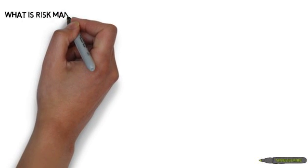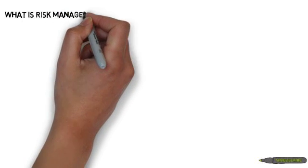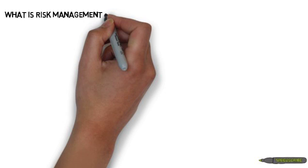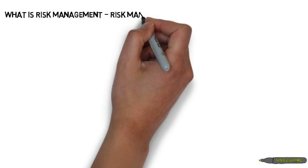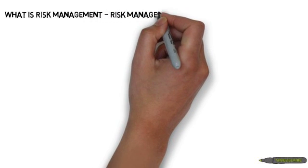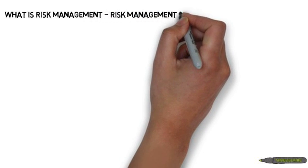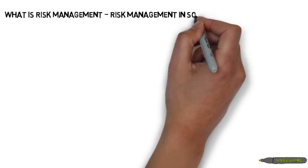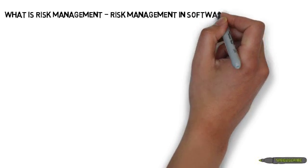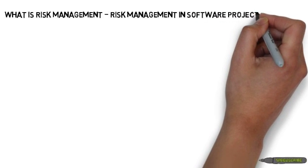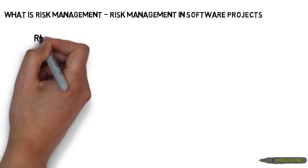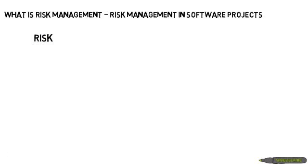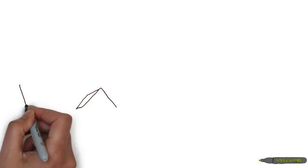This video is on understanding risk and the risk management process. A risk is a potential problem that has not yet occurred. A problem that has already occurred is called by another name — that is an issue — and it is treated differently in software project planning.